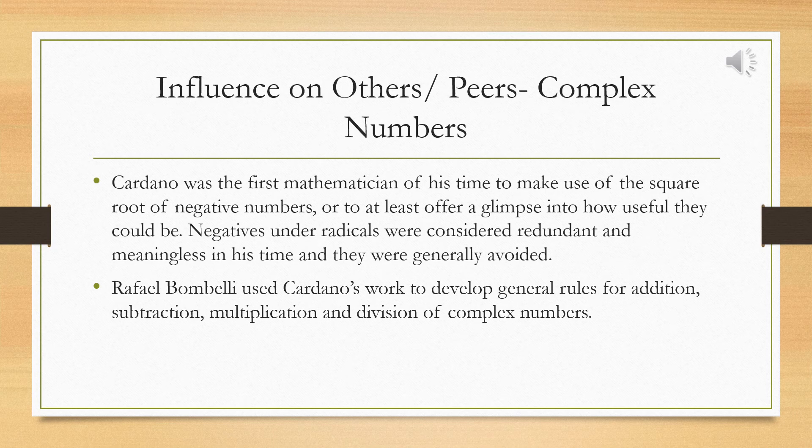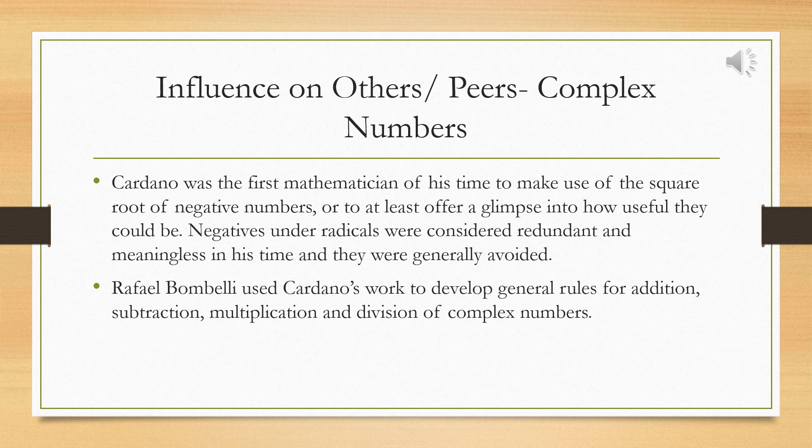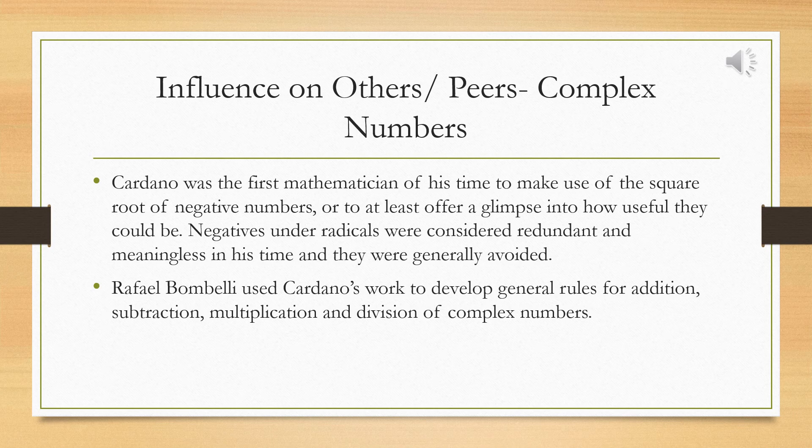Cardano was the first mathematician of his time to make use of the square root of negative numbers, or to at least offer a glimpse of how useful they could be. These were avoided by most and were considered redundant or meaningless. Raphael Bombelli used Cardano's work to develop general rules for addition, subtraction, multiplication, and division of complex numbers.